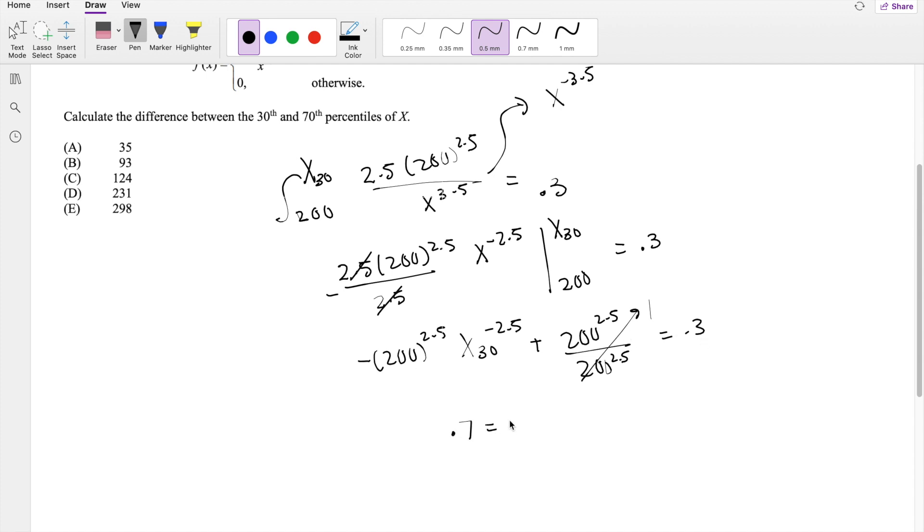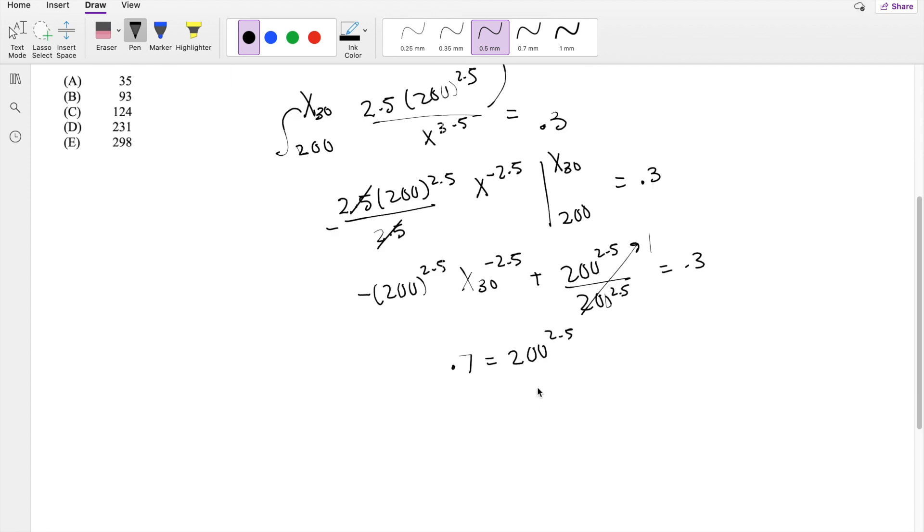And I'm going to send this to the other side, so you get 200 to the 2.5. But the X_30 to the negative 2.5 is technically in the denominator, so that's positive 2.5. So I'm actually going to cross-multiply. So then when you do that, you get 0.7 times X_30 to the 2.5 equals 200 to the 2.5.